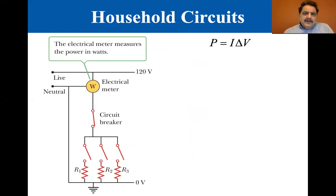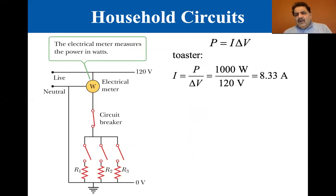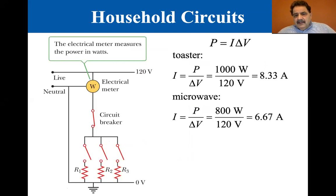Power is equal to the current times the voltage. So a toaster, a thousand watts at 120 volts, gives you 8.33 amps. A microwave, I equals P over delta V. So it's 800 watts over 120 volts. It's 6.67 amps.